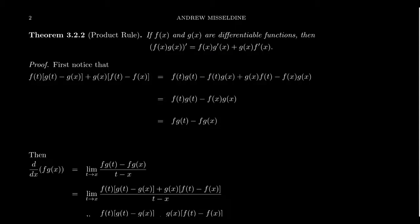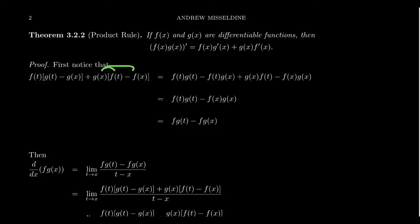To prove this formula, we look at the definition of the derivative as a limit of a difference quotient. First, consider the algebraic quantity: f(t)·[g(t) − g(x)] + g(x)·[f(t) − f(x)]. If you distribute f(t), you get f(t)·g(t) minus f(t)·g(x). Distributing g(x) gives g(x)·f(t) minus f(x)·g(x). The like terms f(t)·g(x) cancel, leaving simply f(t)·g(t) − f(x)·g(x), which equals (fg)(t) − (fg)(x).